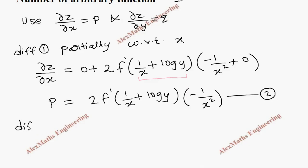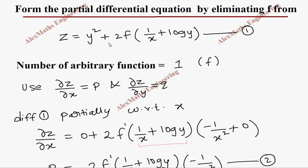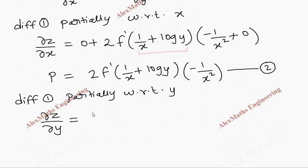In the same way, we are going to differentiate ① partially with respect to y. So on the other side, it is ∂z/∂y. Now, y² derivative will become 2y plus 2 into f derivative, which is f'.